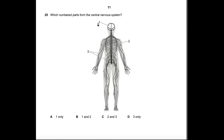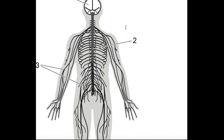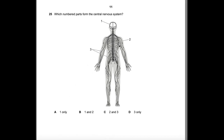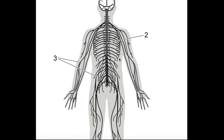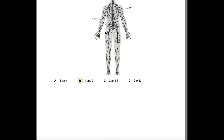Question 25: Which numbered parts form the central nervous system? The CNS consists of the brain and spinal cord. Part 1 is the brain, so any correct option must include 1. Part 2 is the spinal cord. Options A, C, and D do not include both the brain and spinal cord. Answer: B — parts 1 and 2.